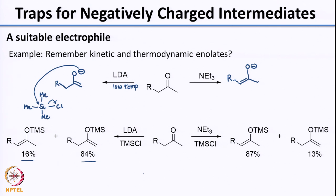Similarly, when you add triethylamine and TMS chloride, what you trap is both the kinetic and the thermodynamic enolate, but you see that the thermodynamic enolate is the major product. In this way you are able to visualize the intermediate by adding a reagent such as TMS chloride.